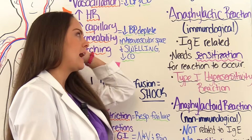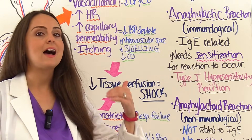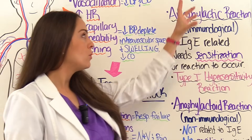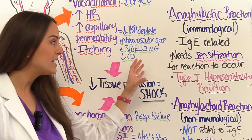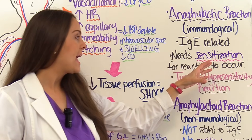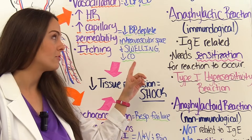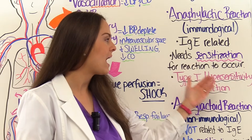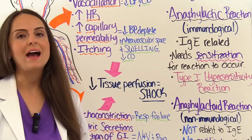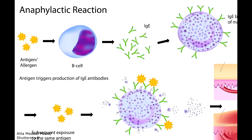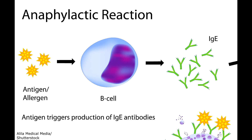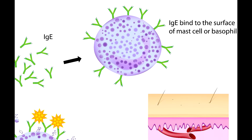With an anaphylactic reaction — related to the immune system and IgE — the patient has to first undergo sensitization. It's known as a type 1 hypersensitivity reaction. The allergen enters the body and triggers the production of IgE antibodies, which attach to the surface of the mast cell or basophil. This first exposure is when the patient has been sensitized.